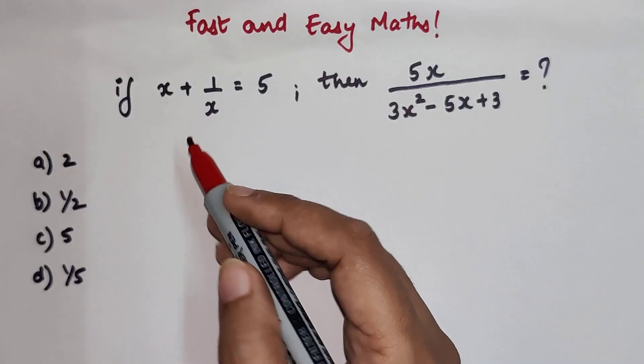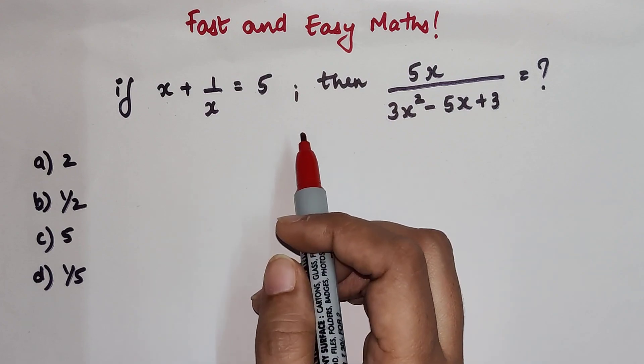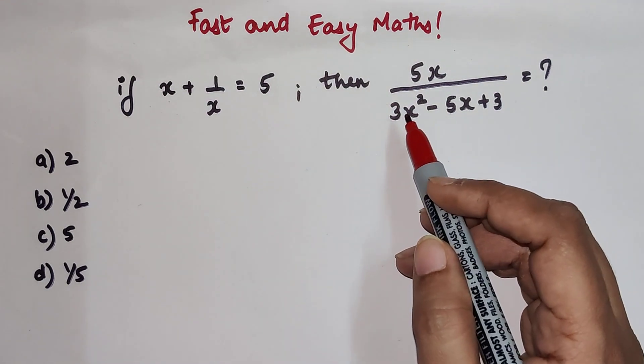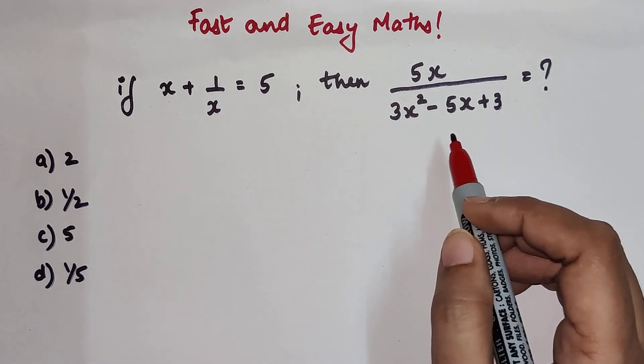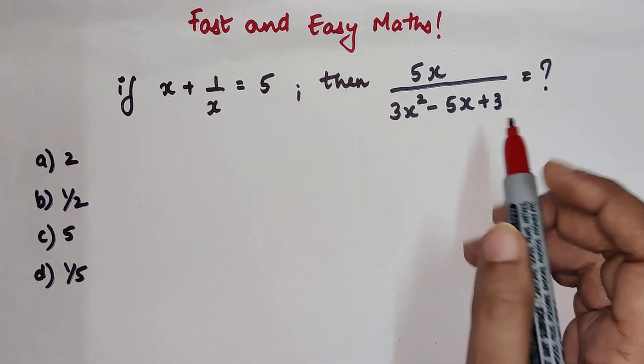So students, today's question is: if x plus 1 upon x is equal to 5, then what is the value of 5x upon 3x square minus 5x plus 3?